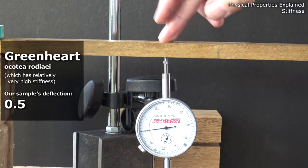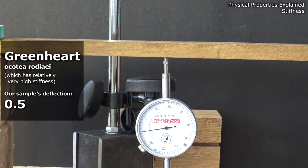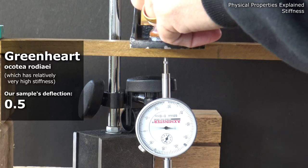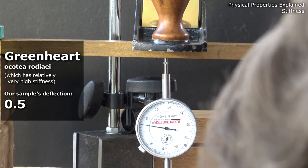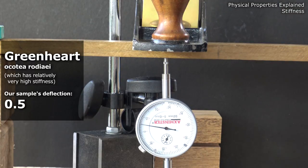This is a sample of Green Heart, deflection there is 0.5 millimetres.